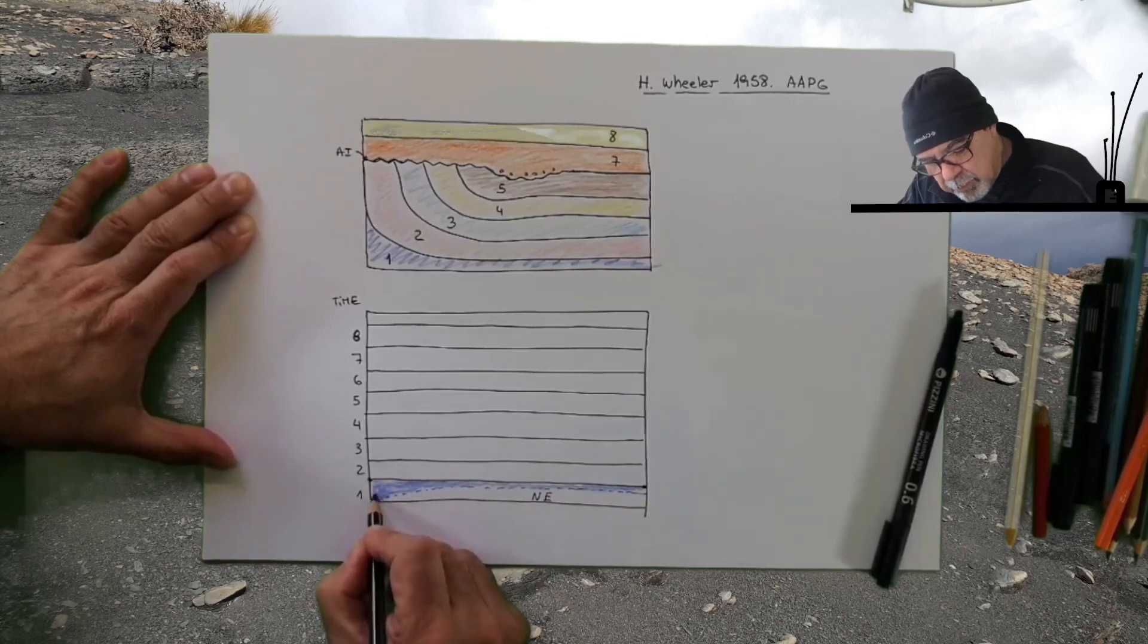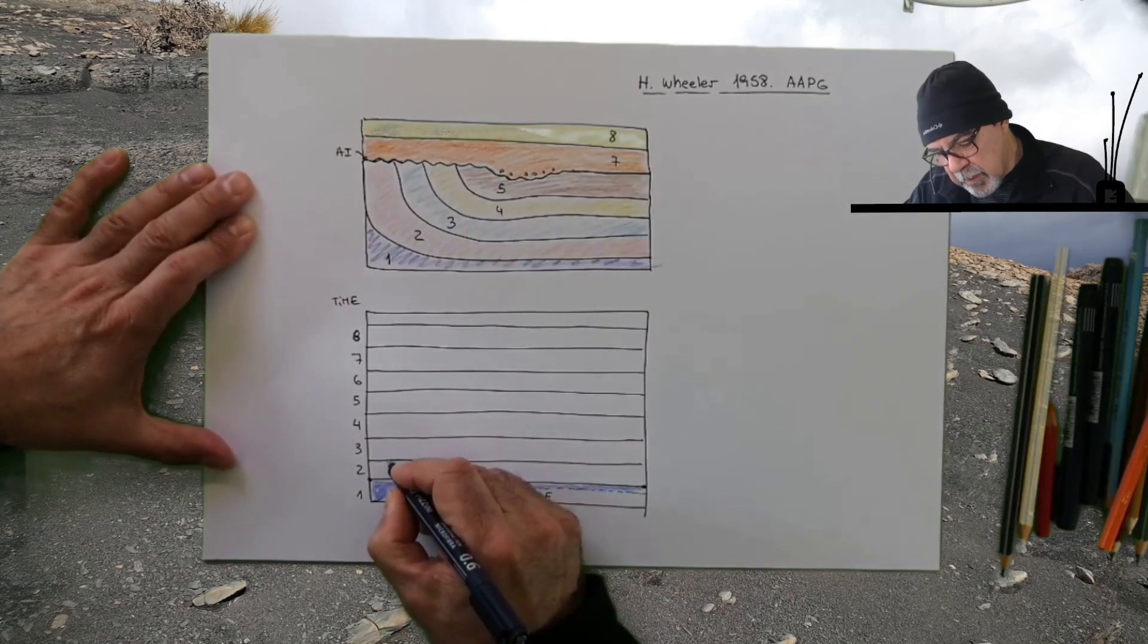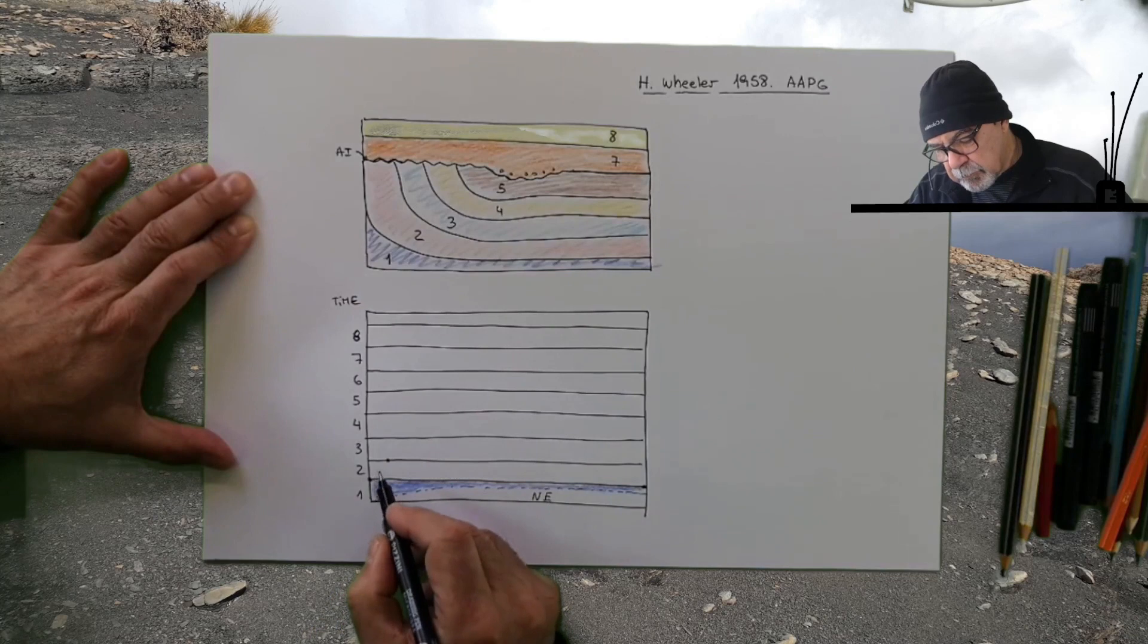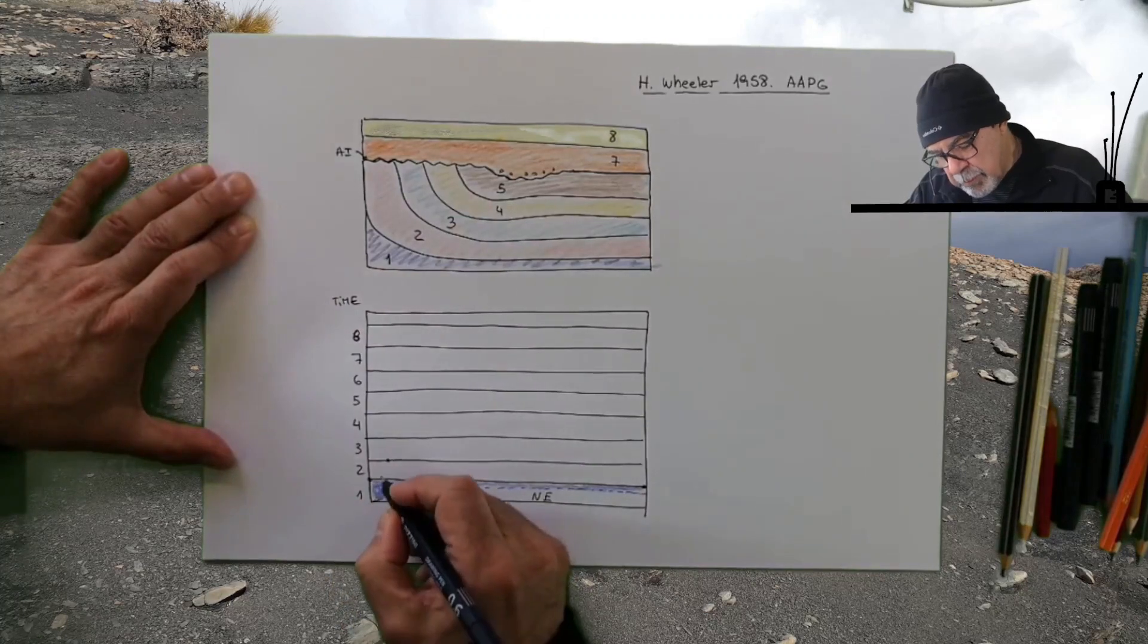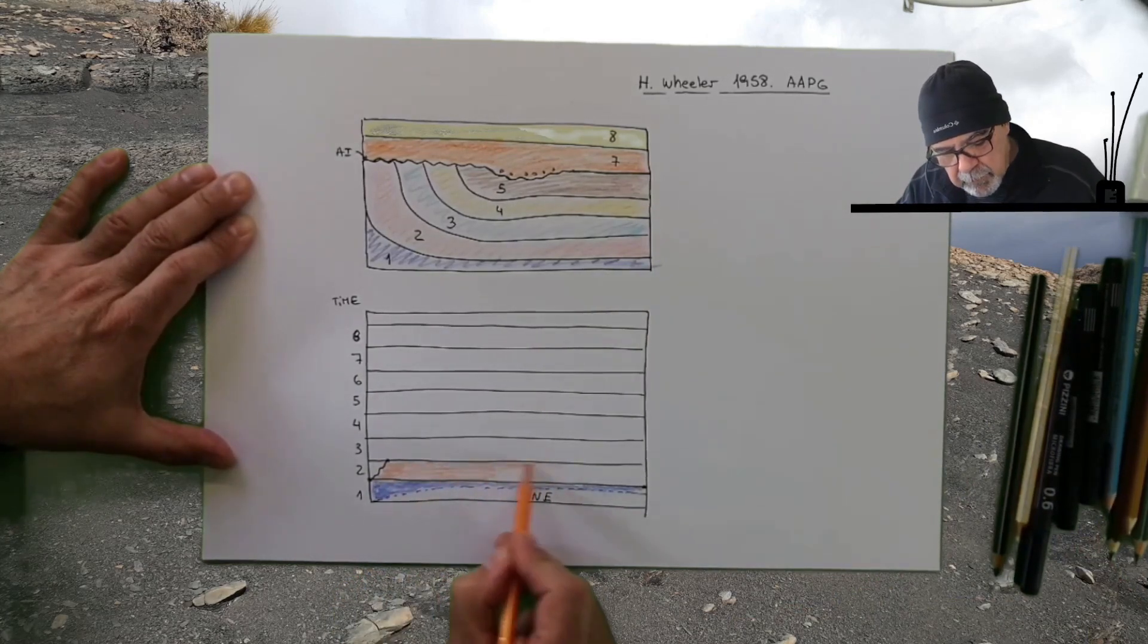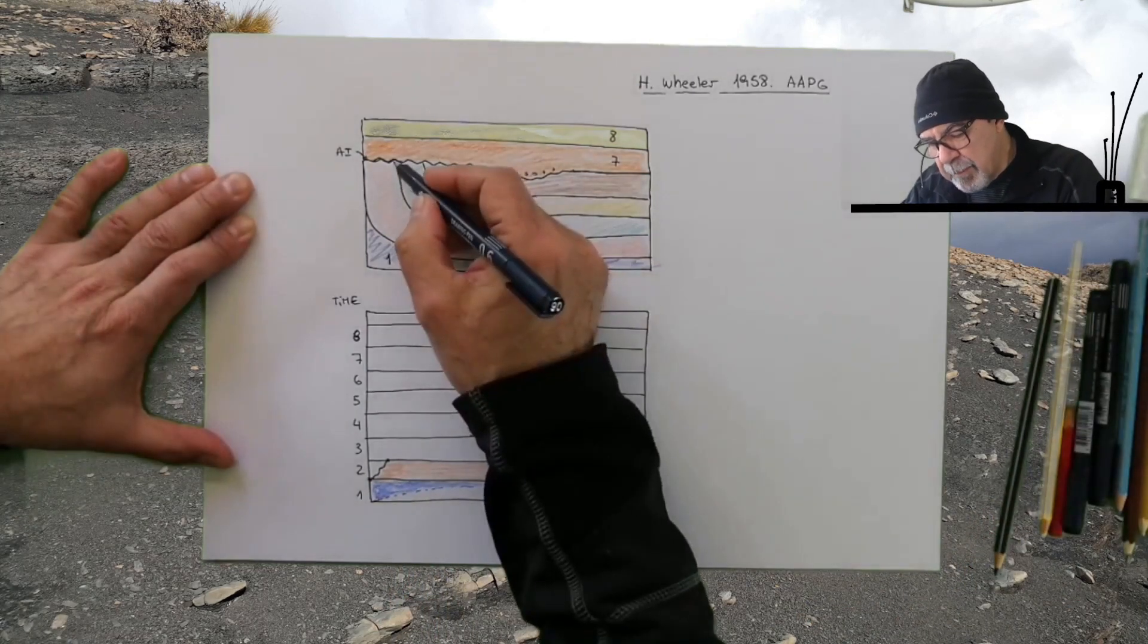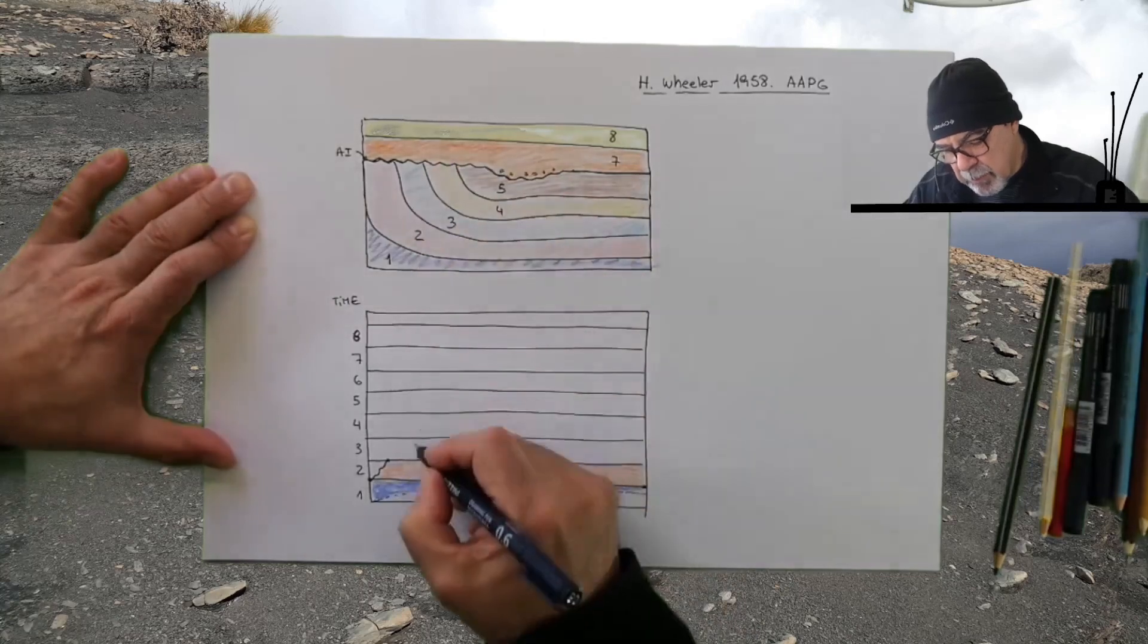Then we are moving into the two bed. The top of the two bed is more or less right here and the base of the two bed is just on the lower line. We are going to build here the unconformity, so the rest of the two bed is complete. Then we have the base of three which is located at the same point of the top of two. Then we have the top of three here.